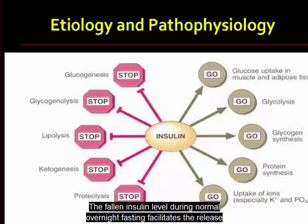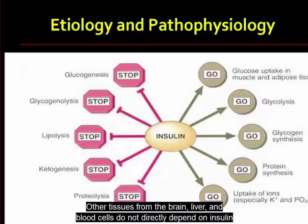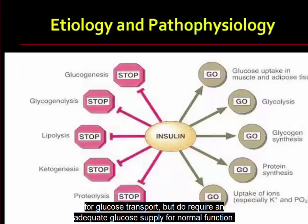The fall in insulin level during normal overnight fasting facilitates the release of stored glucose from the liver, protein from muscle, and fat from adipose tissue. Other tissues such as the brain, liver, and blood cells do not directly depend on insulin for glucose transport, but do require an adequate glucose supply for normal function.